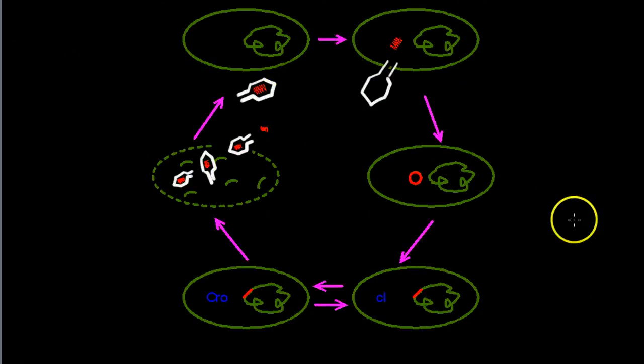As you can see, there is a balance between the CI and the CRO protein that determines whether a lambda phage would undergo the lysogenic or the lytic replication cycle.